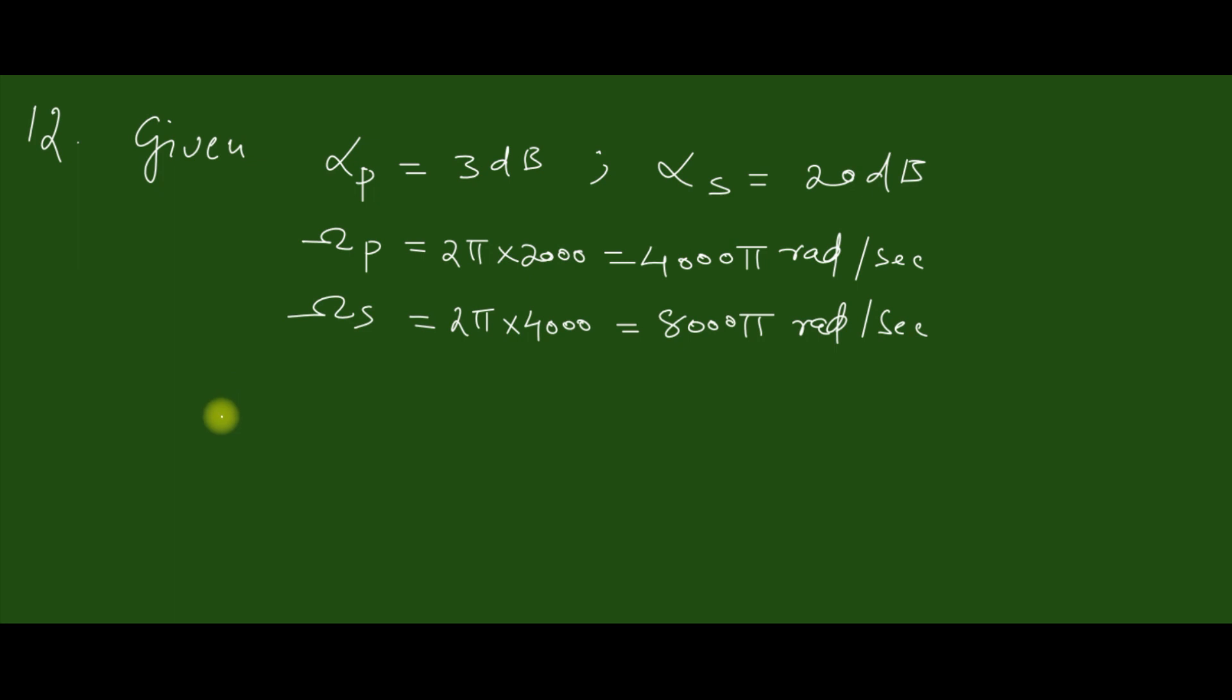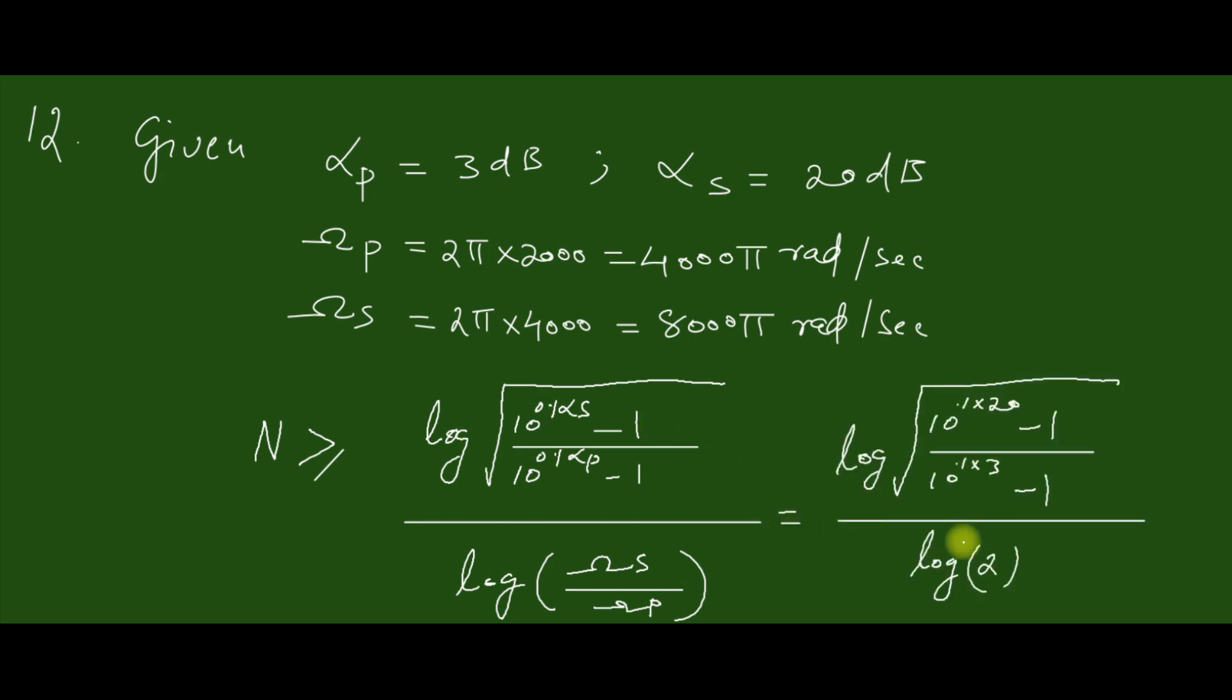The order of the filter N is given by logarithm of (10 raised to 0.1·α_s minus 1) all divided by logarithm of (ω_s by ω_p). We are substituting the values.